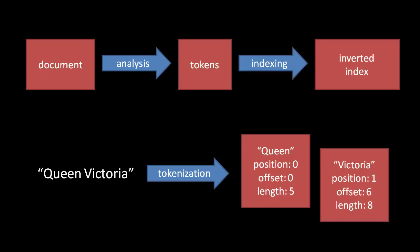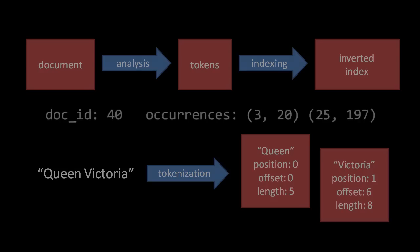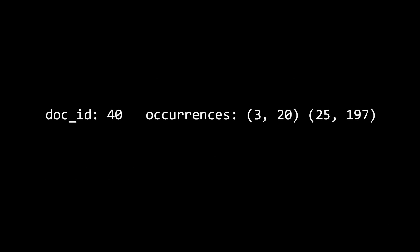Now, if we wish to perform queries which depend not just upon which documents contain which terms, but which also depend upon where the terms are located in those documents and how frequently, then we must also retain each token's position and offset information in the index. The postings list would then look something like this. For each occurrence of the term, we record the position and character offset. Here we have two occurrences, the fourth token in the text, which starts at the 21st character, and the 26th token in the text, which starts at the 198th character.